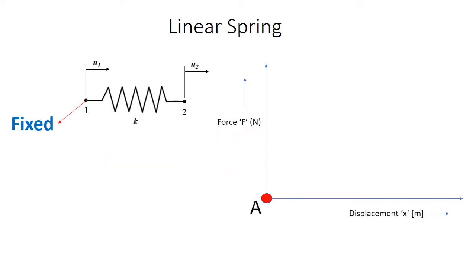This initial configuration corresponds to point A on the force versus displacement diagram. Now when I apply a force F, the spring will have an extension by an amount x. This corresponds to point B in the force versus displacement diagram. In the force versus displacement diagram, if I draw a straight line from point A to point B, the slope of this straight line will give us the spring stiffness K.